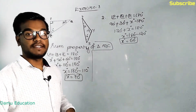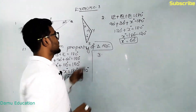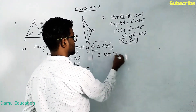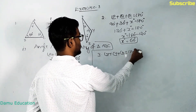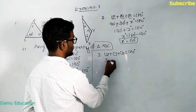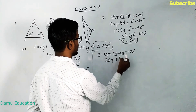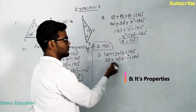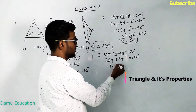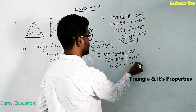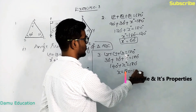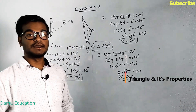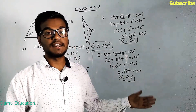For the third question, using the angle sum property of triangle XYZ: angle X plus angle Y plus angle Z equals 180 degrees. Angle X is 30 degrees, angle Y is 110 degrees, and angle Z is X degrees. So 30 plus 110 is 140 degrees, meaning X equals 180 minus 140, which is 40 degrees.